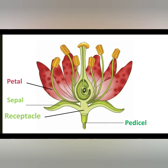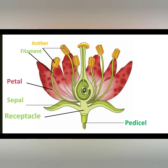The anther and that forms the stamen, which is supported by the filament. The anther and the filament together form the male parts of the flower, which is called the stamen.